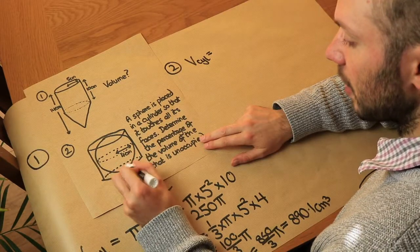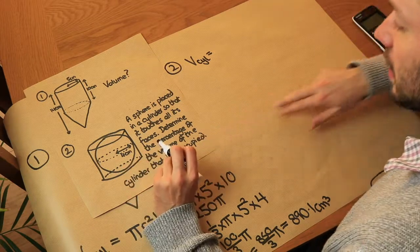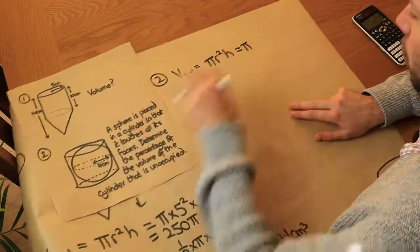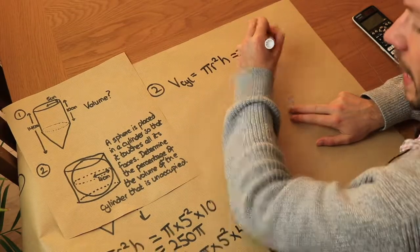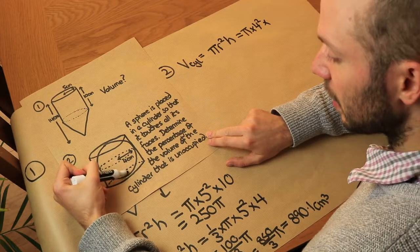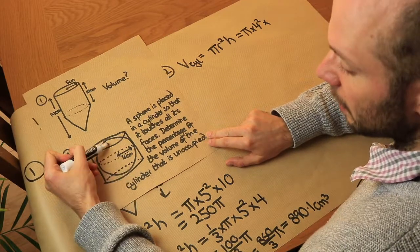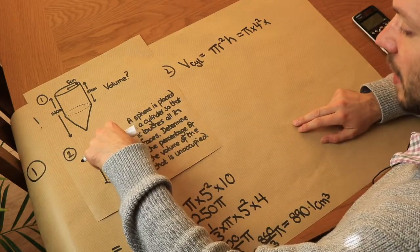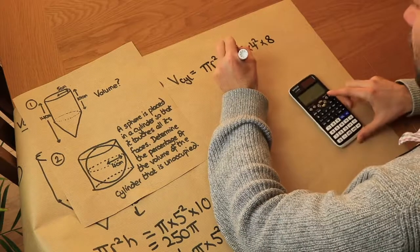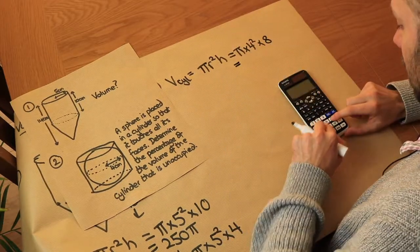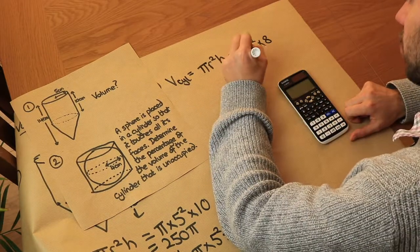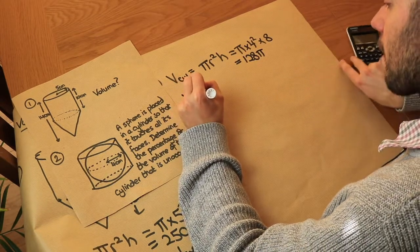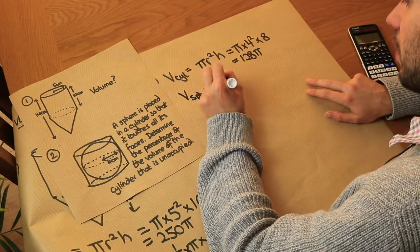The radius of the sphere must be the same as the radius of the cylinder, which is 4. For the cylinder volume π r² h, r is 4, and the height equals the diameter of the sphere which is 8. So the volume of the cylinder is π times 4 squared times 8, giving us 128π.